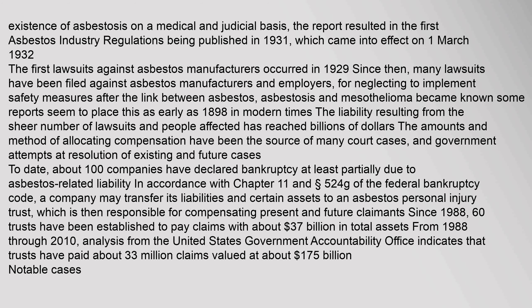The first lawsuits against asbestos manufacturers occurred in 1929. Since then, many lawsuits have been filed against asbestos manufacturers and employers for neglecting to implement safety measures after the link between asbestos, asbestosis, and mesothelioma became known — some reports place this as early as 1898. In modern times, the liability resulting from the sheer number of lawsuits and people affected has reached billions of dollars. About 100 companies have declared bankruptcy at least partially due to asbestos-related liability. In accordance with Chapter 11 and Section 524(g) of the Federal Bankruptcy Code, a company may transfer its liabilities to an asbestos personal injury trust. Since 1988, 60 trusts have been established with about $37 billion in total assets, and have paid about 33 million claims valued at approximately $17.5 billion.